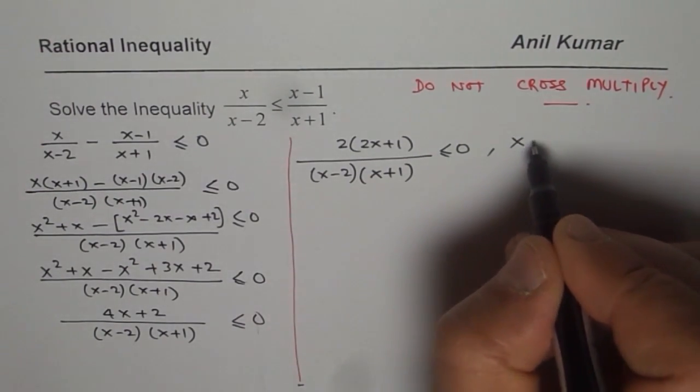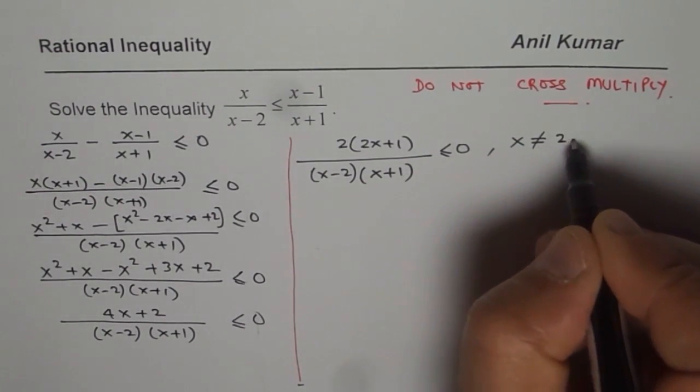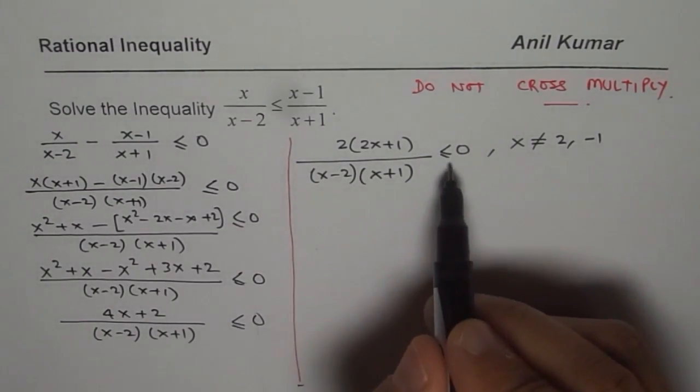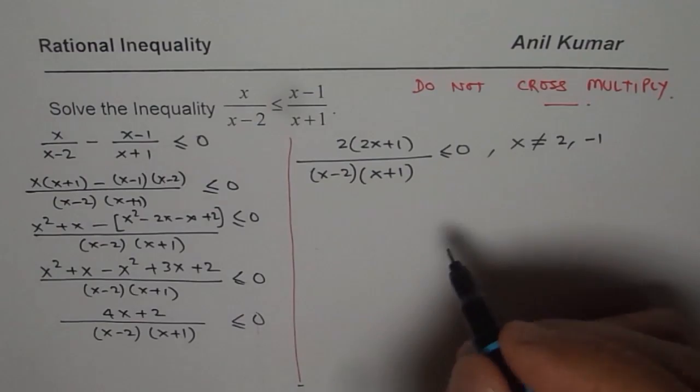Remember, the restrictions here is that x is not equal to 2 and minus 1. So exclude those answers from your solution, less than equal to. So you may get them as part of your answer.